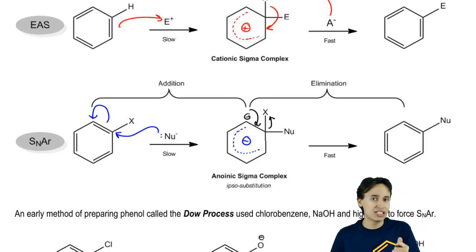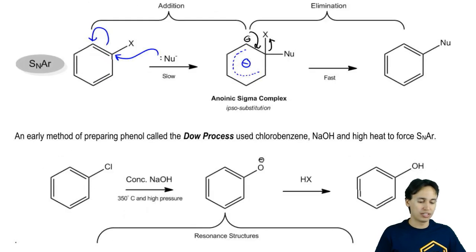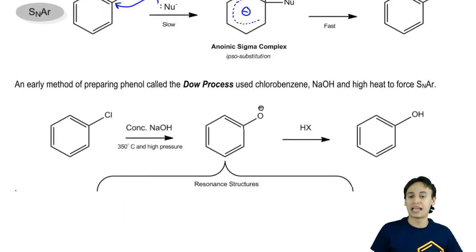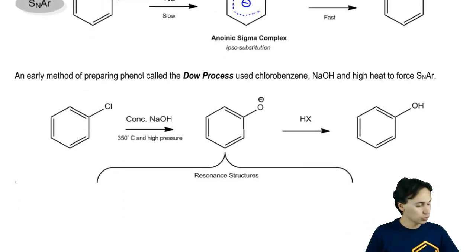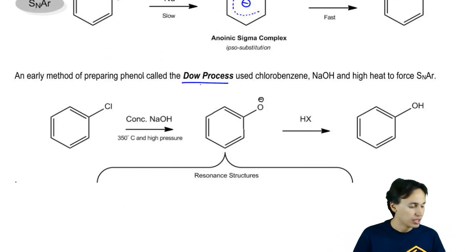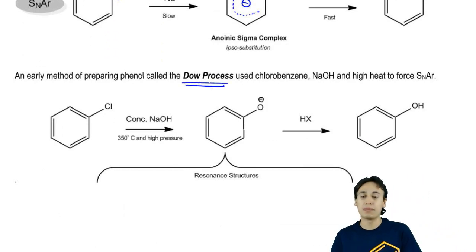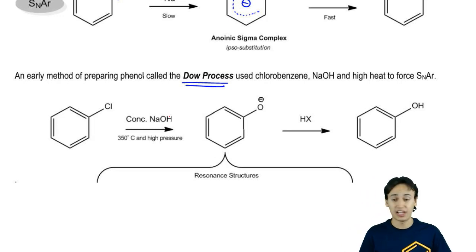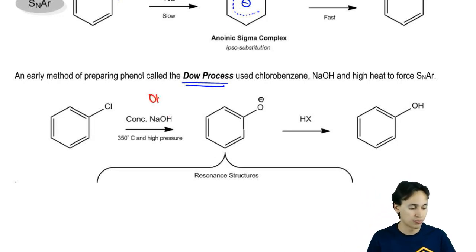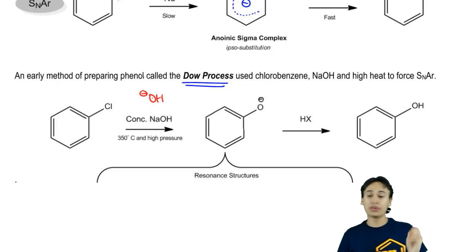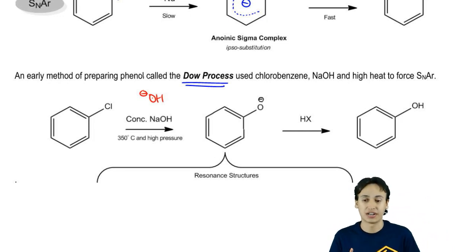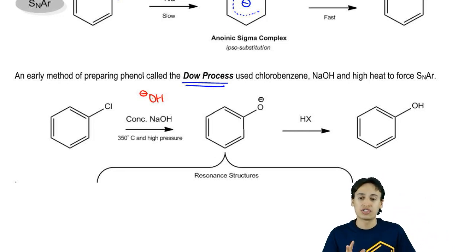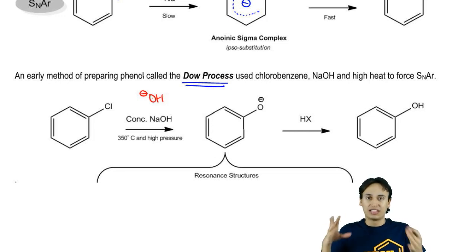Typically, we're going to need lots of heat and lots of pressure to make these reactions work. An early example of this was the Dow process, started by the company Dow. It was an early method to make phenol, but they had to work for it. They took chlorobenzene and reacted it with NaOH — a strong nucleophile — at 350 degrees Celsius and high pressure. All of that is needed to actually form the intermediate.